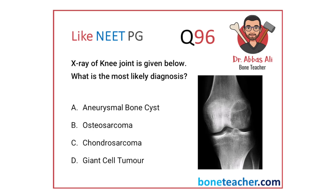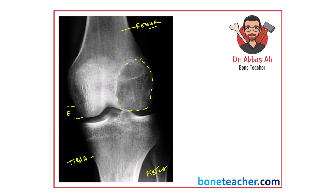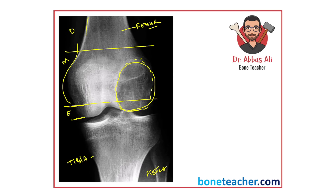Let's study this enlarged X-ray and identify the anatomy. You have the distal end of the femur, the proximal end of the tibia, and the fibula. There is a lesion on the distal end of the femur. Looking at the anatomical aspects: this part is the epiphysis of the bone, then you have the metaphysis, and this is the diaphysis. The lesion is in the epiphysis as well as the metaphysis.